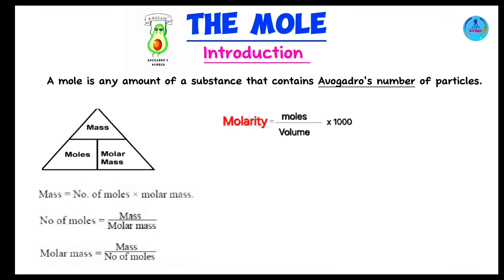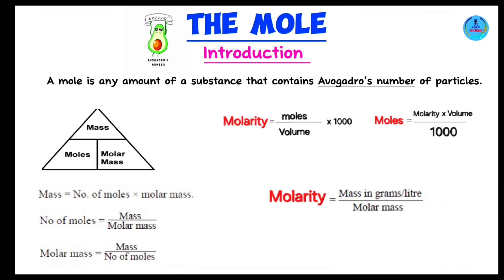There are two more equally important formulas. Molarity = moles ÷ volume × 1000. You can rearrange this: moles = molarity × volume ÷ 1000, or use it to find volume if you have molarity and moles. The third formula: molarity = mass in grams per liter ÷ molar mass. These three formulas are very important — you cannot tackle any questions on molarity without knowing them. Watch the two upcoming videos to see how they are applied, and we'll have a fascinating time together.